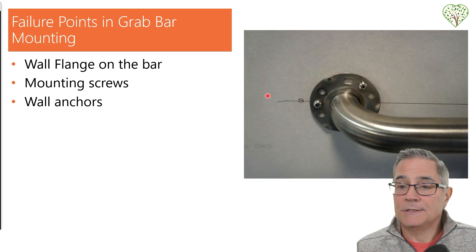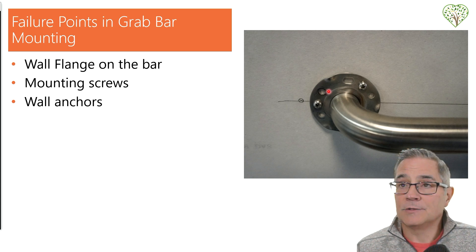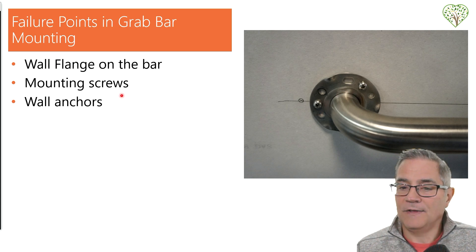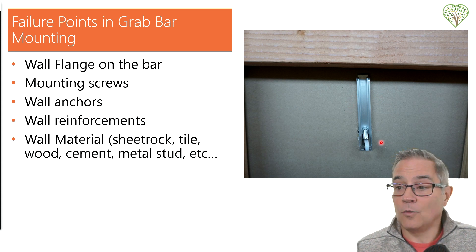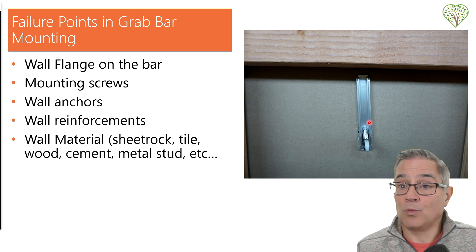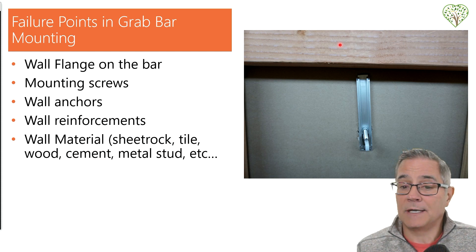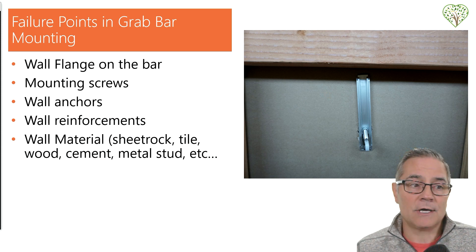Let's talk about failure points in grab bar mounting. Number one could be the wall flange on the bar itself — for example, the weld between the flange and the pipe on an Amazon basic grab bar. The mounting screws could also be a failure point, as could the wall anchors. If an anchor can't support the weight and pulls through the wall, that's another failure point. Wall reinforcements like a two-by-six can fail too — it depends on whether the mounting screws can withstand the load. And then the sheetrock itself: will it withstand and hold the weight requirements?